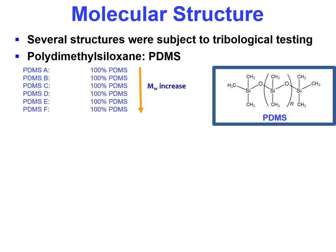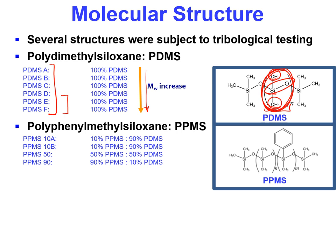We look at several species of siloxanes. First, there is a grouping of six polydimethylsiloxane samples, alphabetized A through F. The two methyls denote dimethyl; silicon-oxygen denotes siloxane. This is one monomer of which multiple monomers may exist, and molecular weight increases with viscosity due to greater numbers of monomers in the higher mass samples. We also have polyphenylmethylsiloxane, abbreviated PPMS, with the phenyl molecule branched onto the silicon atom, along with methyl molecules. These are comprised of 10%, 50%, and 90% phenylmethyl branches, with the remainder being dimethyl branches.